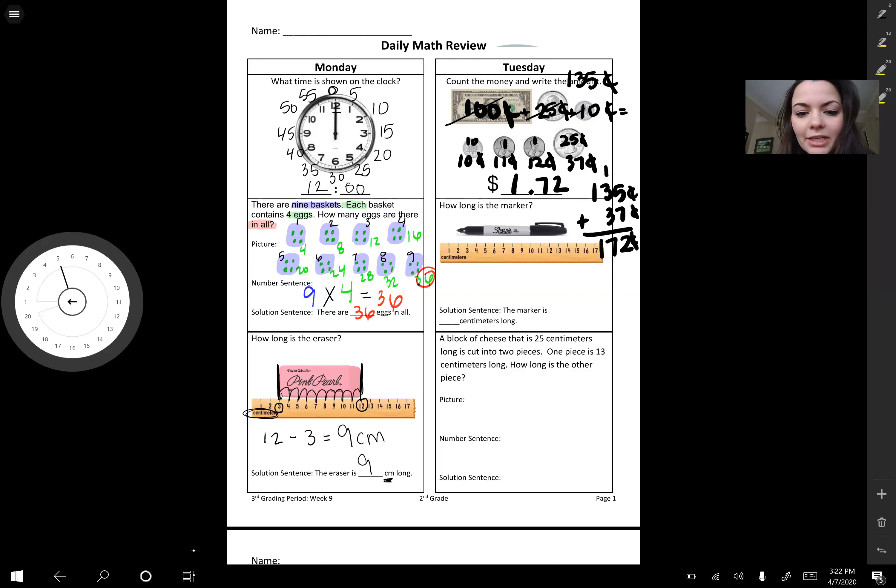Now we have how long is the marker. We're going to always look at our ruler and see what units are we measuring in. In this case, it says centimeters. Remember, very important to remember what unit we are measuring in.